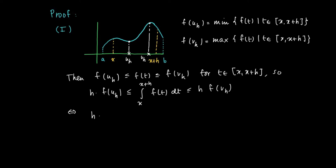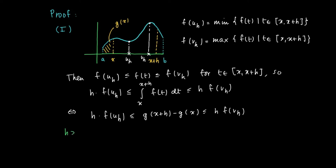Now, the integral from x to x+h of f(t) dt is essentially the difference g(x+h) minus g(x), where g(x) is the surface area below the graph of the function between a and x, and g(x+h) is the complete surface between a and x+h. So we have that difference as the integral from x to x+h of f(t) dt.